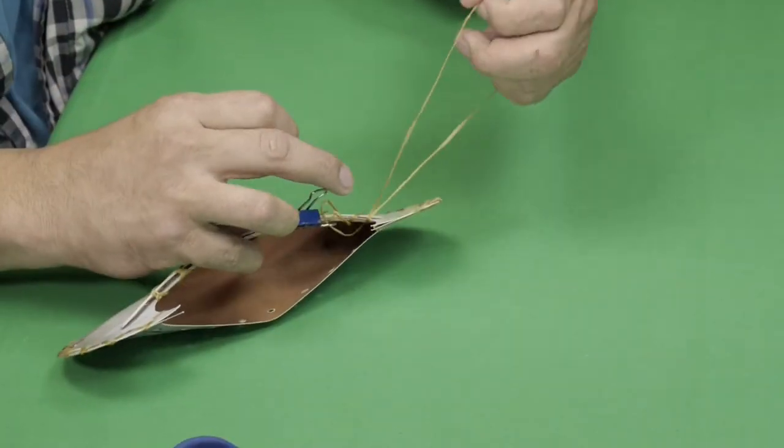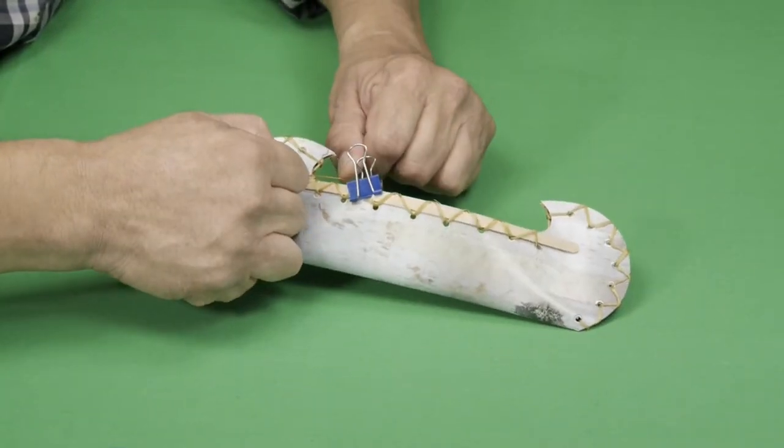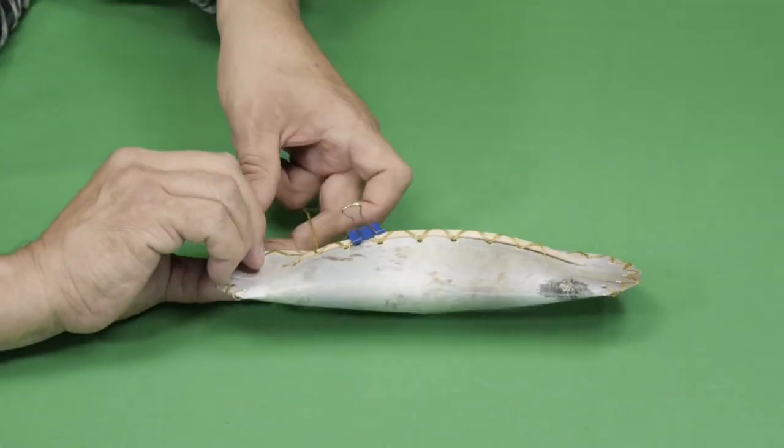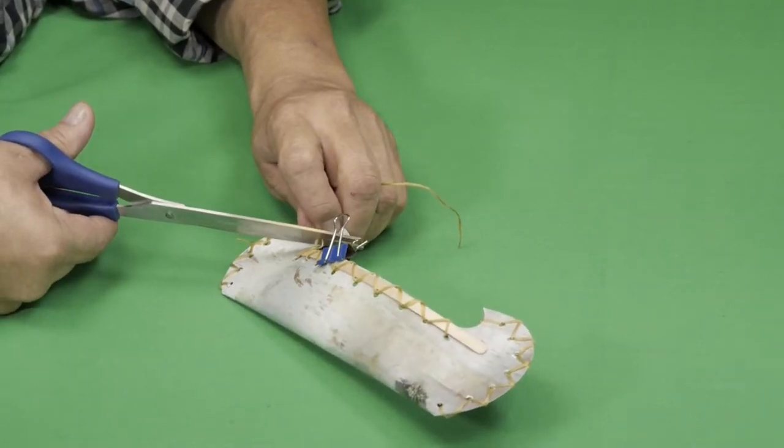Then tie three knots for a secure hold. Cut off the remaining lace.